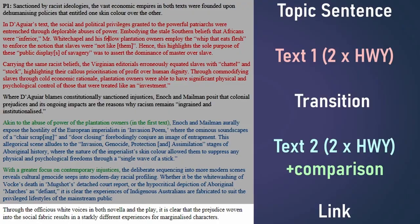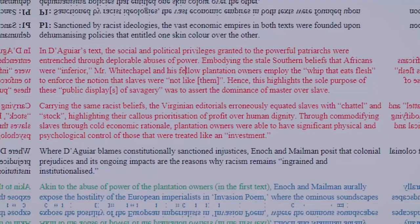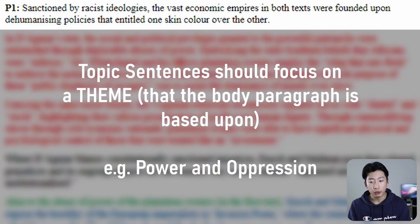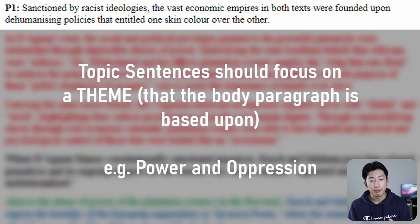For my topic sentence, I like to broadly mention one common theme that both texts have. In this case, the theme is power and oppression. For each of my body paragraphs, they all focus on one common theme — for example, my second body paragraph is focused on the theme of defeat and compliance, and my third on hope and freedom. I found that focusing on one main theme for each body paragraph allows you to group similar ideas very nicely and effectively. In this topic sentence I say: 'sanctioned by racist ideologies, the vast economic empires in both texts were founded upon dehumanizing policies that entitled one skin color over the other.' Again, you can see I'm mentioning the keywords of the topic.